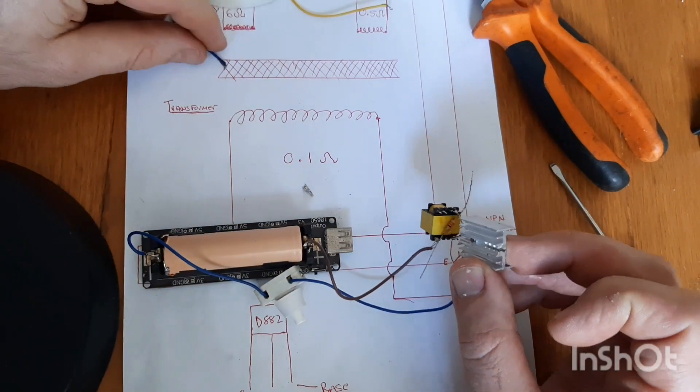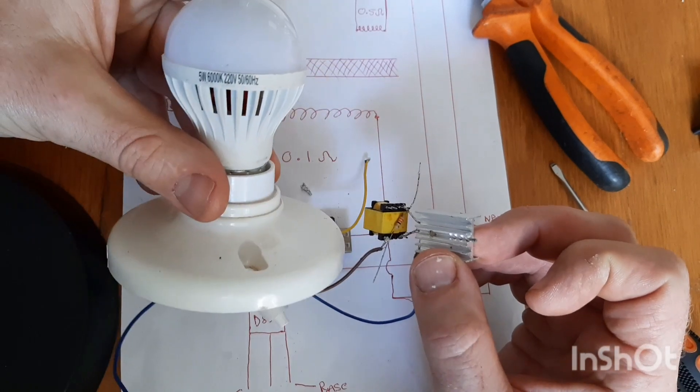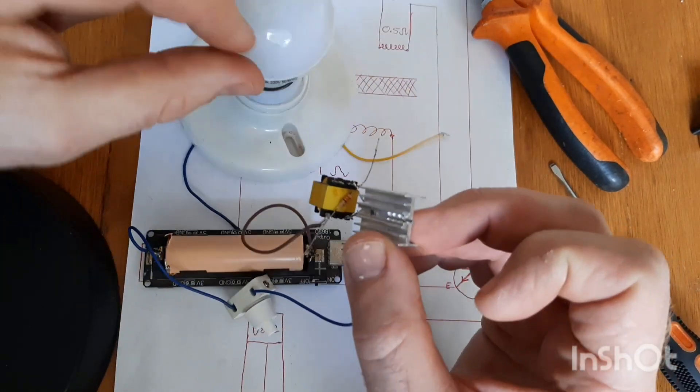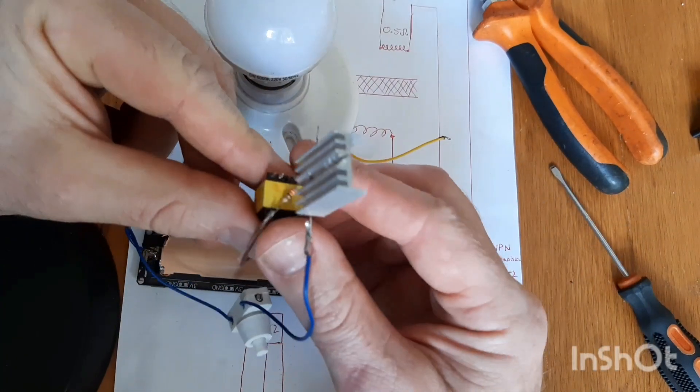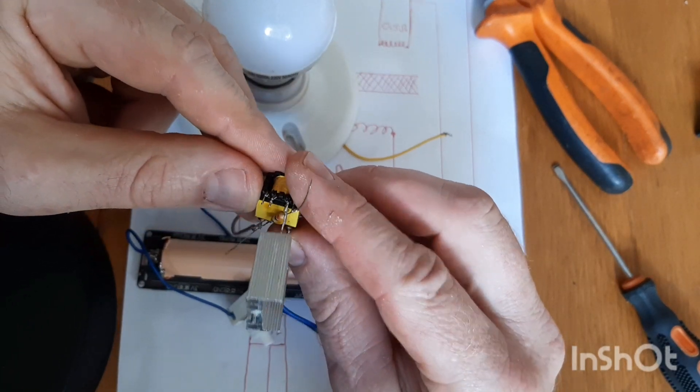And then lastly, we can connect our 220 volt light bulb right onto these two terminals over there. So let's go and solder those on.